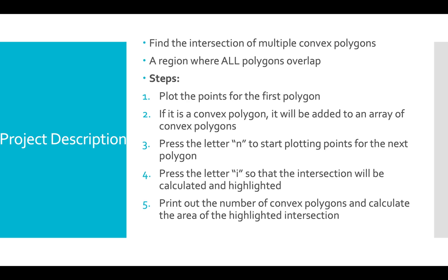First of all, I will plot the points for the first polygon. If it is a convex polygon, it will be added to an array of convex polygons. After being done with the first polygon, I'll press the letter N to start plotting points for the next polygon. I'll keep doing this until I'm happy with the number of my polygons.